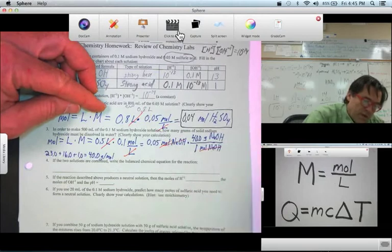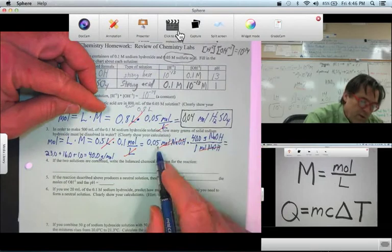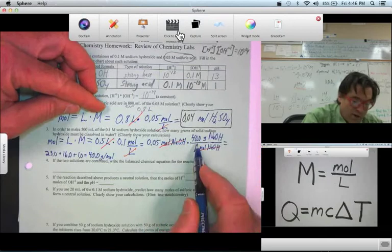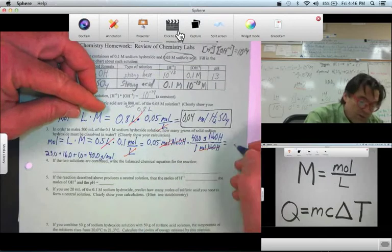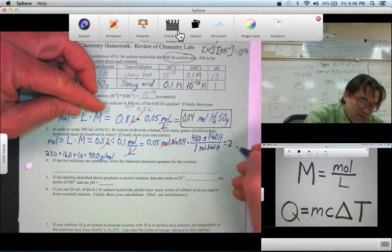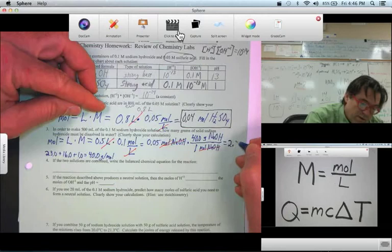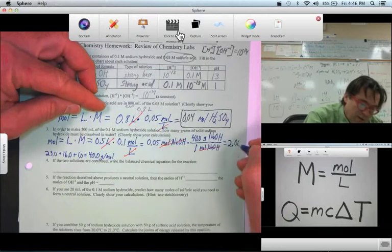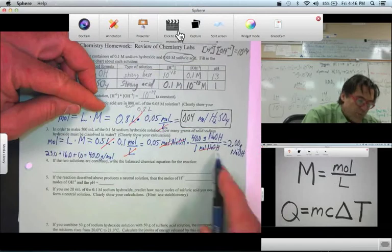And my goodness, 0.05 times 40, 0.1 times 20, 1 times 2, looks like 2 grams. How interesting. I don't know what our sig figs are, but it came out exactly two. So 2.0 grams of NaOH. There we go. All right.